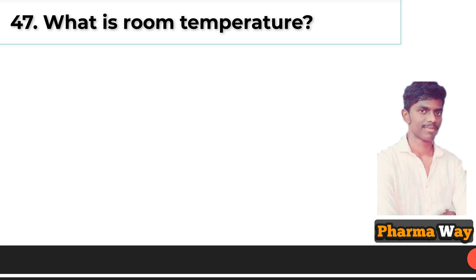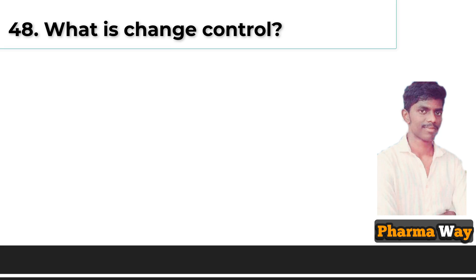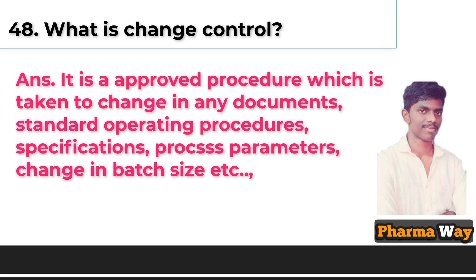What is room temperature? Answer: 25 degrees centigrade. What is change control? Answer: It is an approved procedure undertaken to make changes in any documents, standard operating procedures, specifications, process parameters, change in batch size, etc.